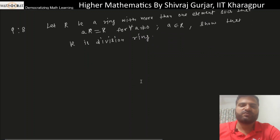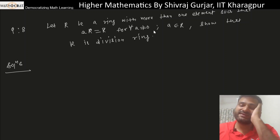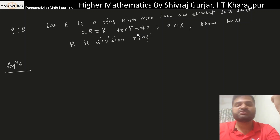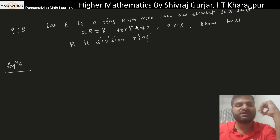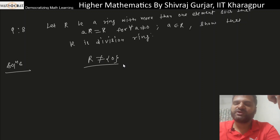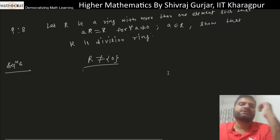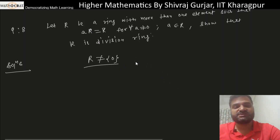Let's take this question: let R be a ring with more than one element such that aR equals R, where a is an element of R — this is true for every non-zero a. We have to show that R is a division ring. R has more than one element, so it cannot be the zero ring.